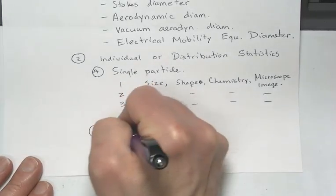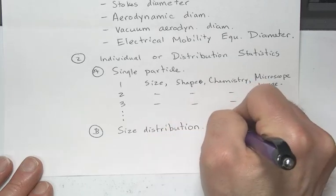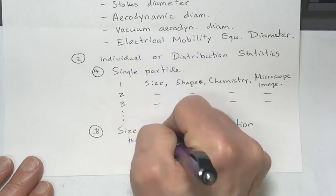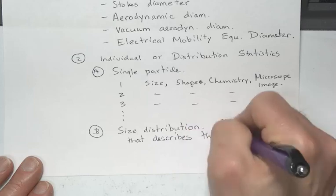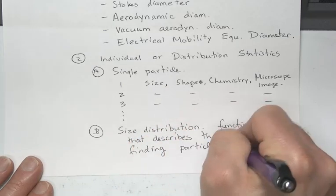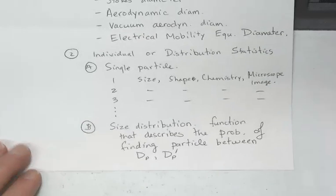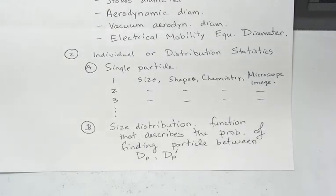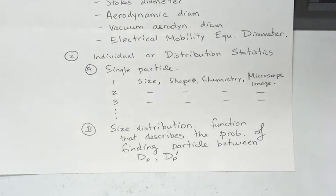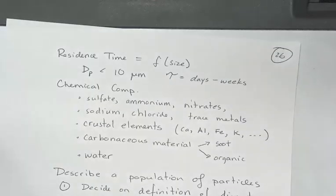So the second choice is whether we're going to use individual or distribution statistics. Option A: single particle characteristics. You make a list: particle one, particle two, particle three, and then whatever characteristics that are important to your problem or that you can measure like size, shape. Particle three maybe you can get a microscope image of it. There's software that can go through an image of a whole bunch of particles and pick out each one. By doing this for all the particles, we've described the population. Option B: at least for size we can do a size distribution where we have a function that describes the probability of finding a particle between size DP and DP prime.